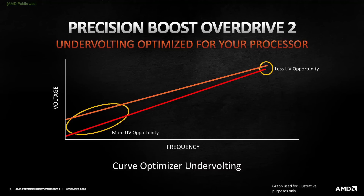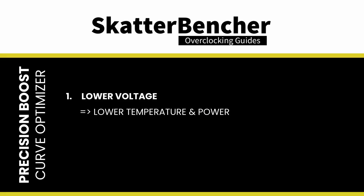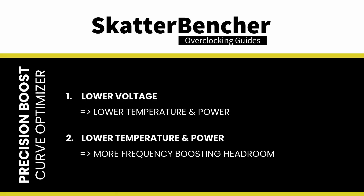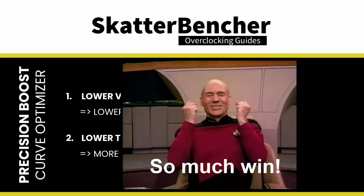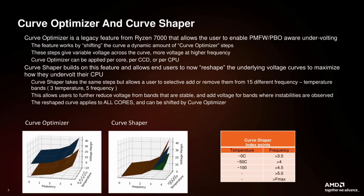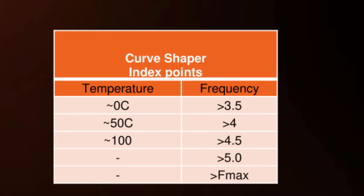Curve Optimizer is a tool that lets users exploit the voltage margin by undervolting their processors. Undervolting an AMD Ryzen CPU helps in two ways. First, it lowers the operating temperature and power consumption, and as a consequence, the Precision Boost 2 algorithm can use this additional headroom to boost to higher frequencies, so you tend to get lower temperatures and extra performance. It's a win-win. Curve Shaper adds to the Curve Optimizer functionality by expanding its flexibility with 15 additional tuning points.